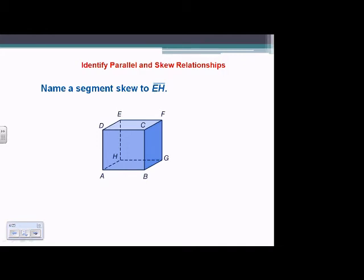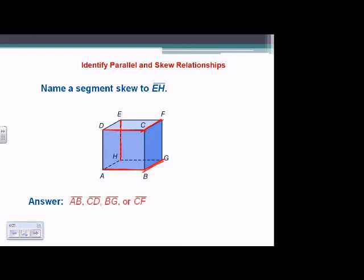Next: name a segment skew to EH. We have EH on the back side of that box. Skew means it won't intersect and it's not in the same plane. Two examples: segment AB is skewed, along with segment DC, to EH. Also CF and BG. Any one of those four will not intersect EH and aren't in the same plane.